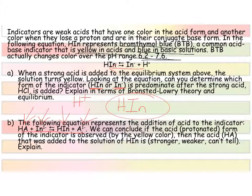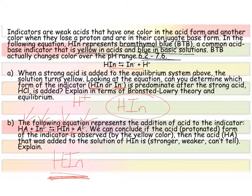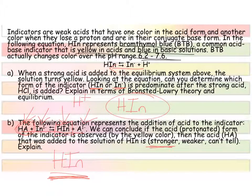We can conclude that if the protonated form — the HIn, the one that's got the hydrogen on it — is what we're observing, that tells us that the HA acid is actually stronger than our indicator. The HA is the one that's actually being dissociated, and the indicator is being taken out of solution because it is reacting with the H⁺.